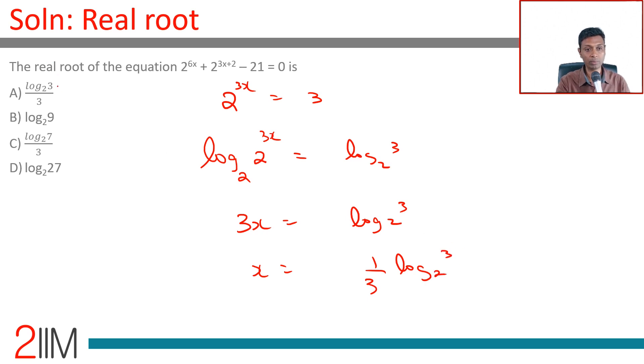Log₂3 divided by 3, that is the right answer. First step: convert this to a quadratic equation, get two roots. One of the roots does not work out, take the other root. Bring back x into the system: 2^(3x) = 3. Then take log on both sides, you are through.